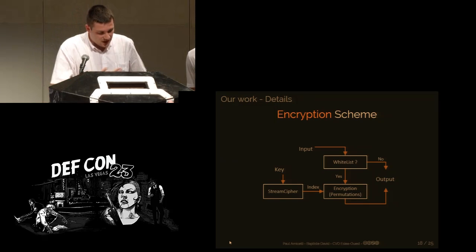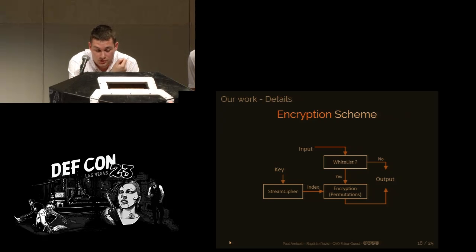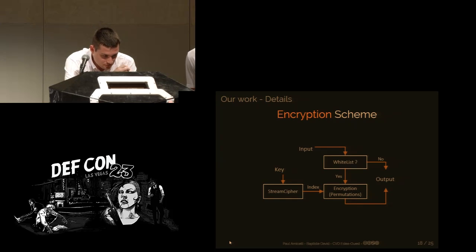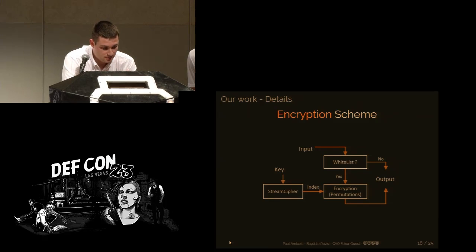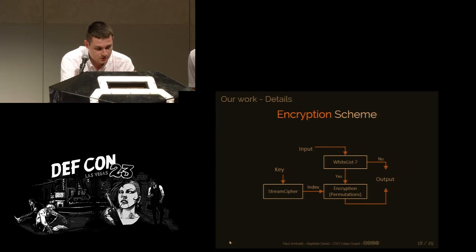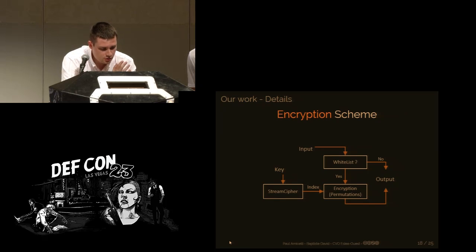To sum up, from the algorithm's point of view there are two possibilities for each keystroke. If the keystroke received is not in the whitelist, no encryption operation is performed — it's broadcast to the system normally and won't be touched by our application. If the keystroke is in the whitelist, it is ciphered: it receives substitution and permutation operations and is output on the system.